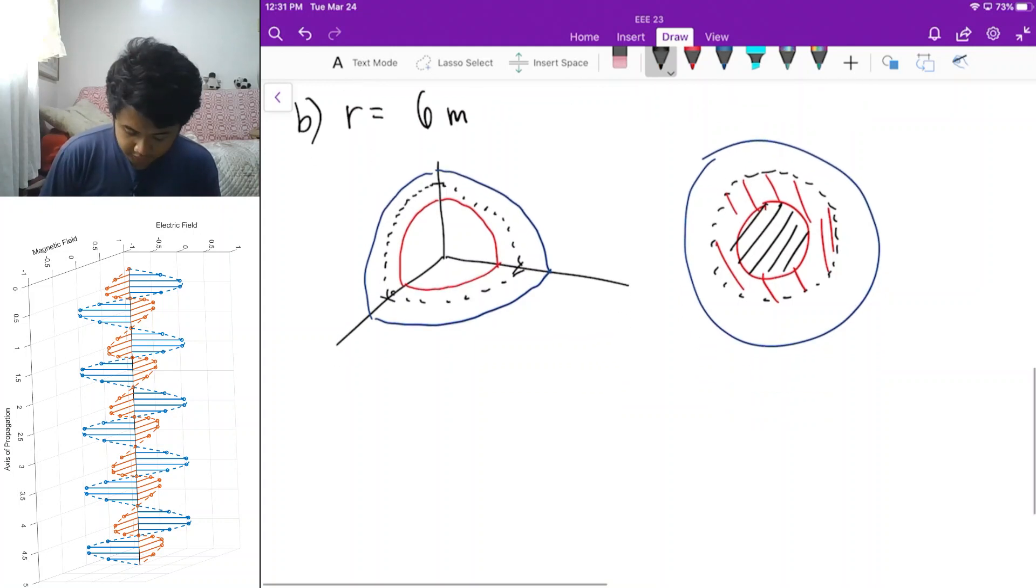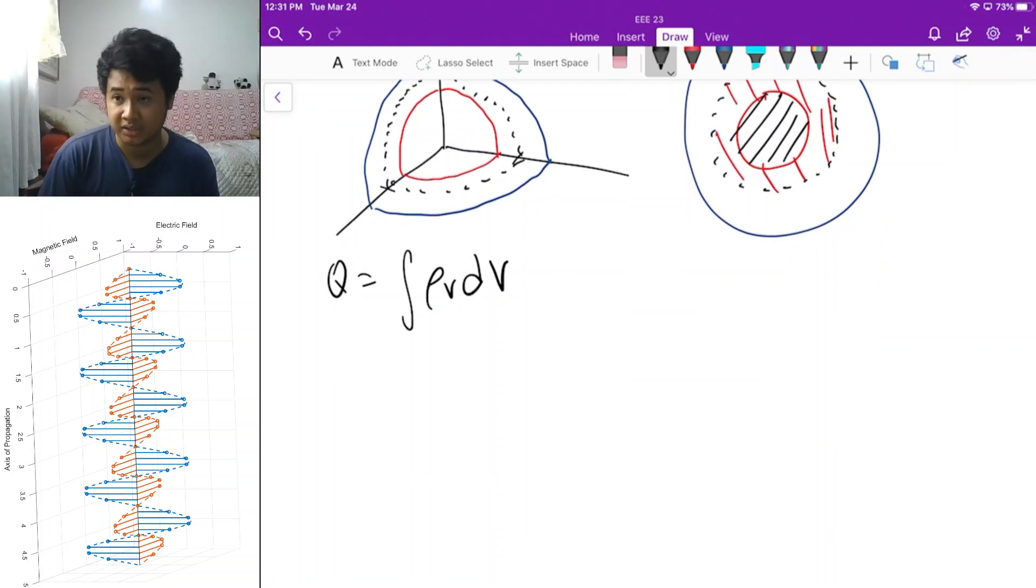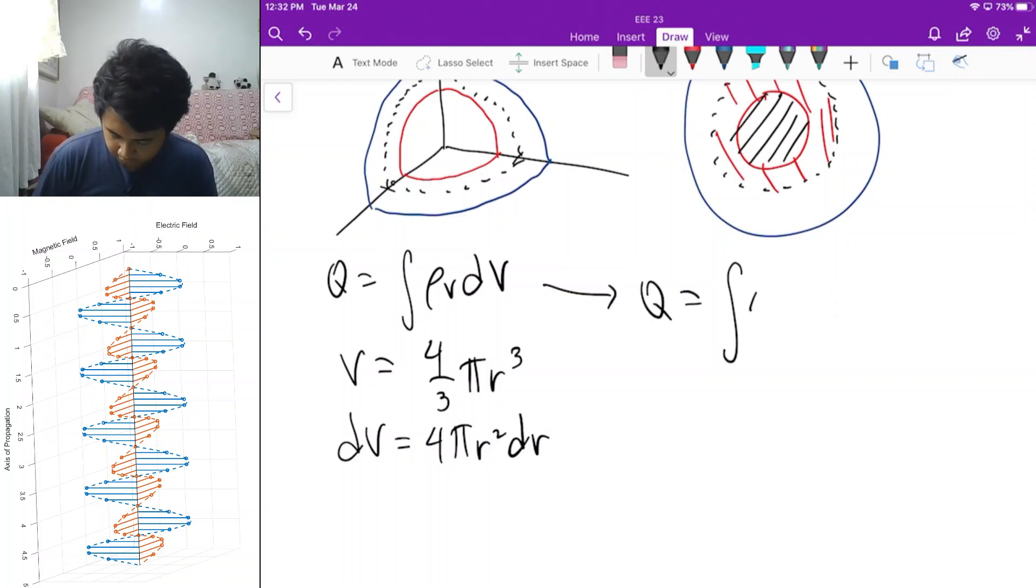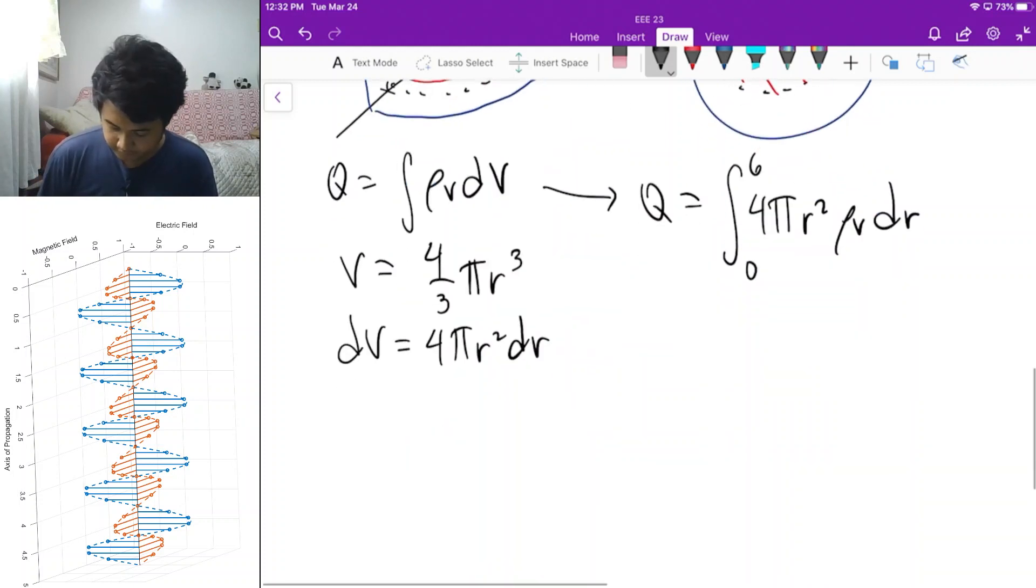To solve for the total charge, note that our surface is a sphere. If we want to get the total charge inside, we're getting the volumetric integral of rho v. Since r is equal to 6 is a sphere, the volume of a sphere is 4 thirds pi r cubed. If you get the differential of V with respect to r, you'll get 4 pi r squared dr. Therefore, the total charge enclosed is the integral of 4 pi r squared rho v times dr, and you integrate this r from 0 to 6.